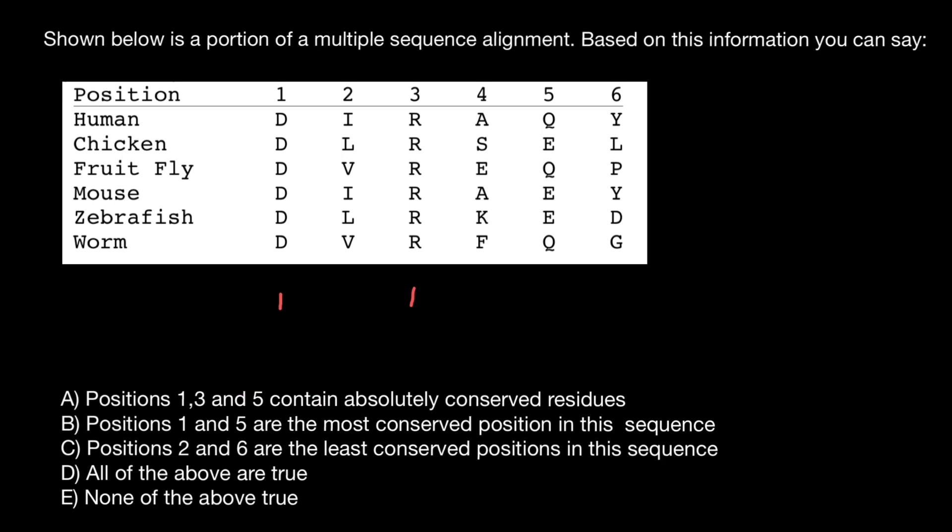As for position number five, we see that in one species we have one amino acid, in three it is Q. We have three variants, and in other three we have another amino acid, so three plus three. That means this is not absolutely conserved residues. Number one, three, and five - it is true for number one and three, but not true for number five. So this is a false statement.